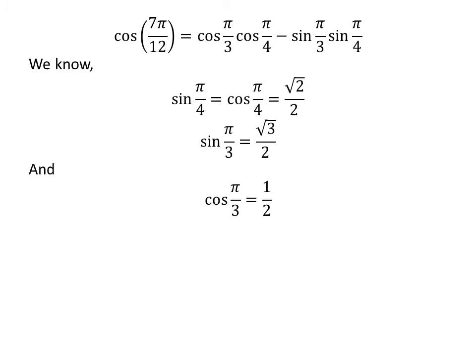We know sine of pi upon 4 is equal to square root of 2 upon 2, and cosine of pi upon 4 is equal to square root of 2 upon 2. We also know the value of sine of pi upon 3 is equal to square root of 3 upon 2, and cosine of pi upon 3 is equal to one half.